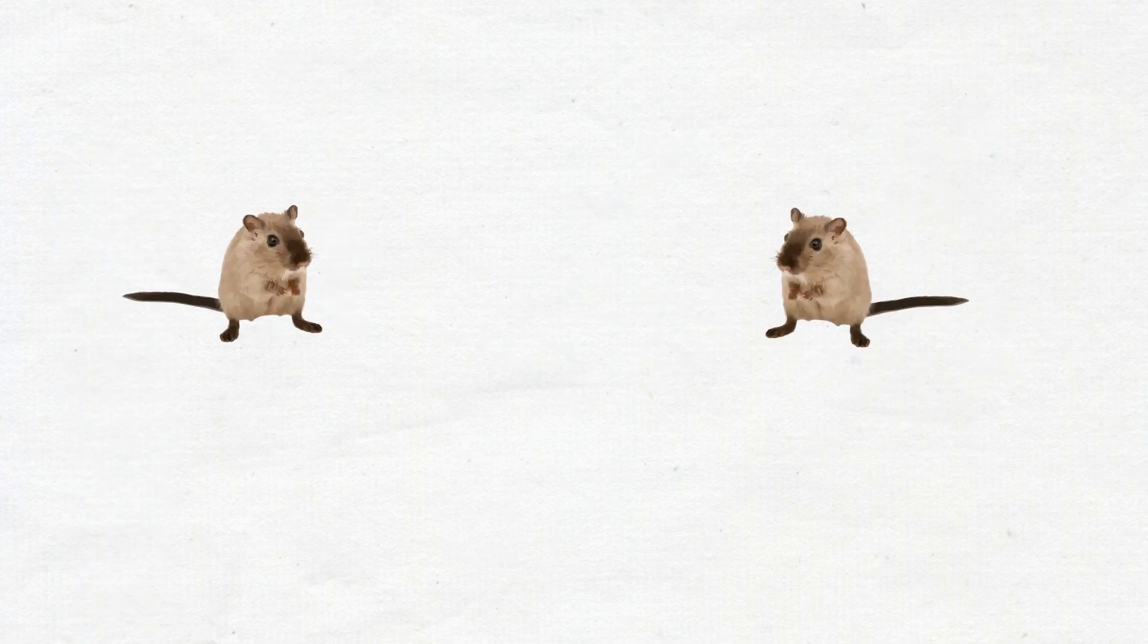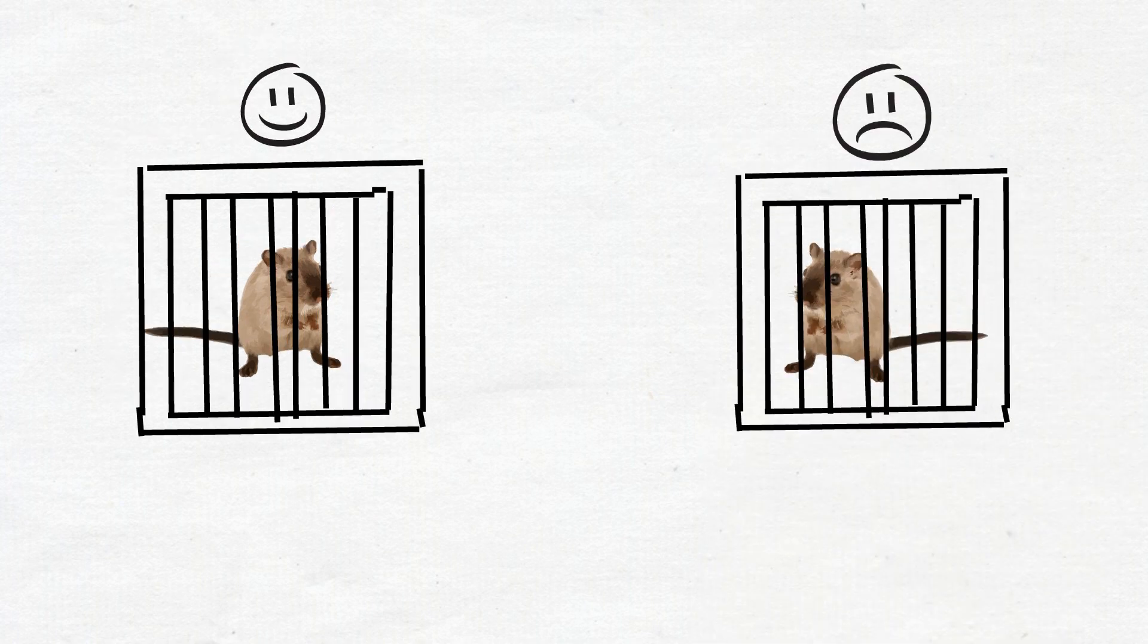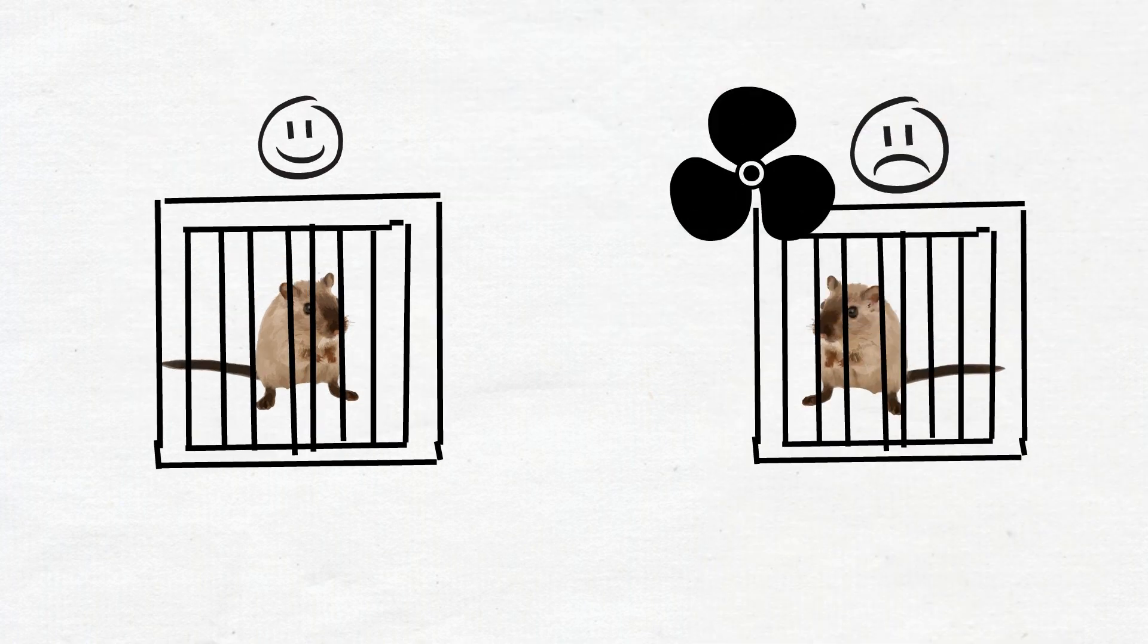But hamsters catch COVID-19 and tests were done on them. This is what was done. Researchers at Hong Kong University put cages of healthy hamsters next to cages of infected ones, with a fan in between drawing air from the infected to the healthy cage. They sometimes also placed a face mask in the airstream.